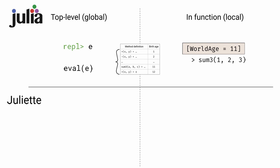From the top level, be it at the REPL or as the argument to eval, we can call any method within the method table. From inside of a function, visible methods are restricted to those older than the local world age, in this example, 11.